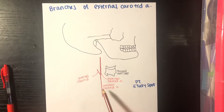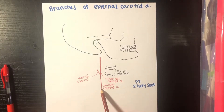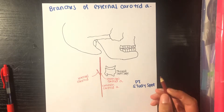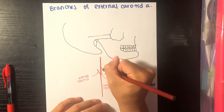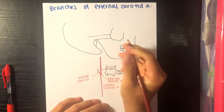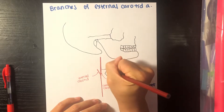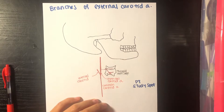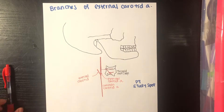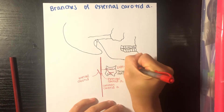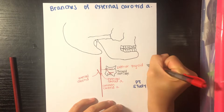Today we're drawing the branches of the external carotid artery. I already drew the common carotid, which divides into the external and the internal. The first branch we're going to draw is right above that thyroid cartilage — this is your superior thyroid artery.